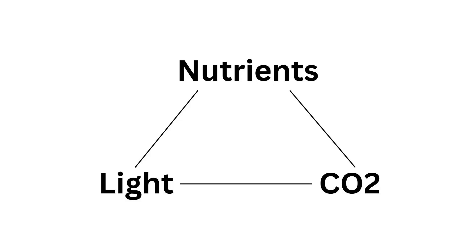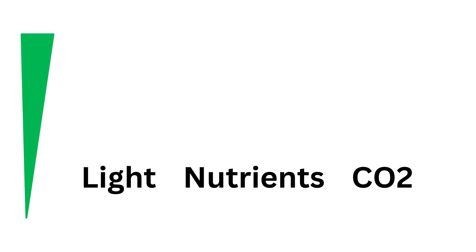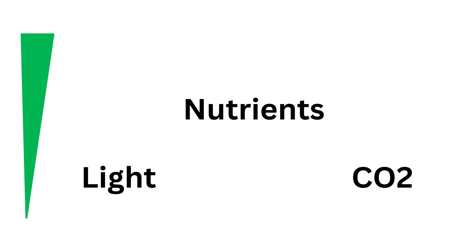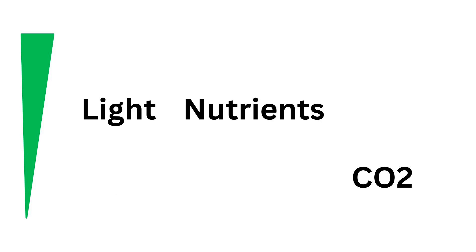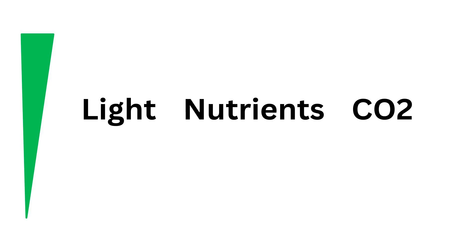Nutrients are one of the three pillars of plant life and growth, along with light and CO2. The plant always consumes those three things at a certain ratio. That just means that if you add a lot of nutrients, you also need to have a lot of light, because the plant can't use those nutrients without it. Same goes for CO2.